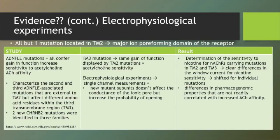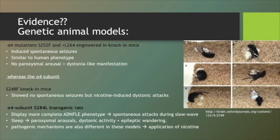Determination of the sensitivity to nicotine for nAChRs carrying mutations in TM2 and TM3 showed clear differences in the direction and extent to which the window current for nicotine sensitivity was shifted for individual mutations, indicating differences in pharmacogenomic properties that are not readily correlated with increased ACh affinity. This was conducted on genetic animal models.